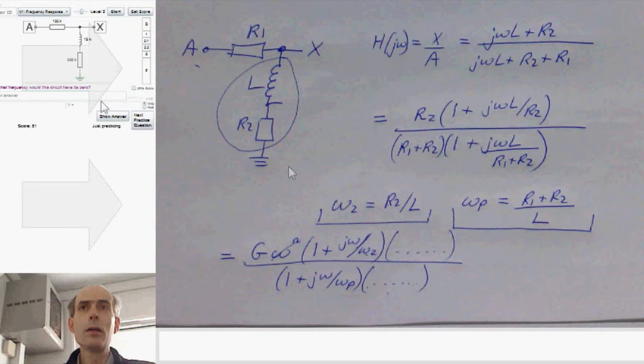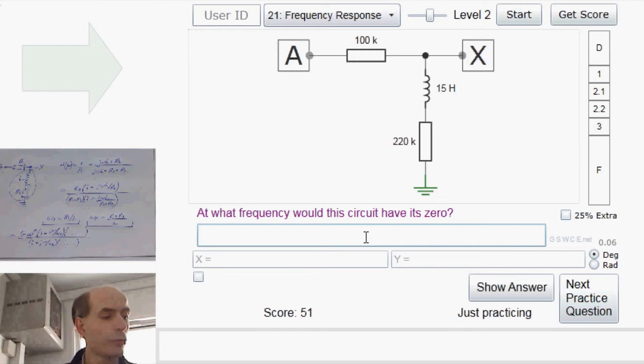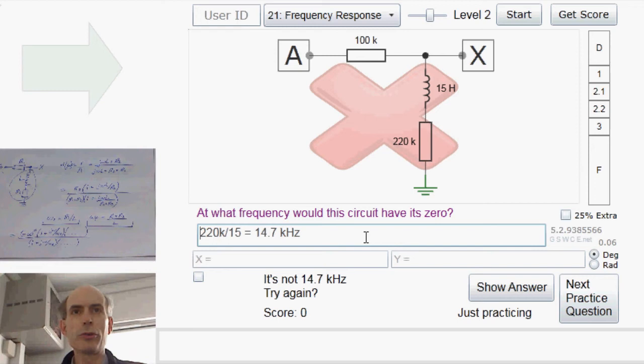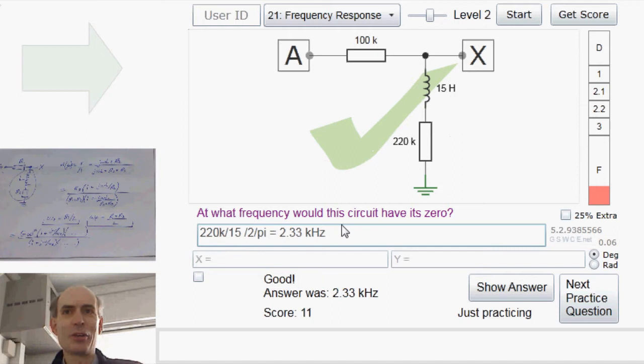So, we can work out the answer to this problem. They want to know the zero. And the zero is R2. That's 220k divided by L, which in this case is 15. Not forgetting, of course, that that gives you a result in radians per second, and not Hz. So we have to divide by 2 pi to get the answer in Hz.